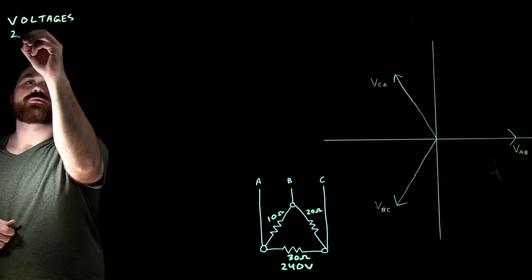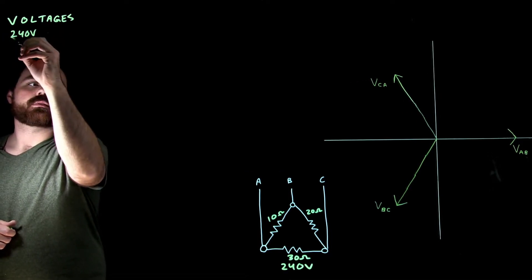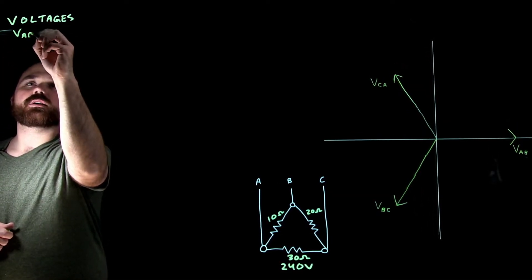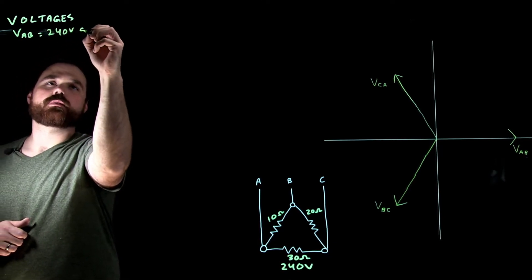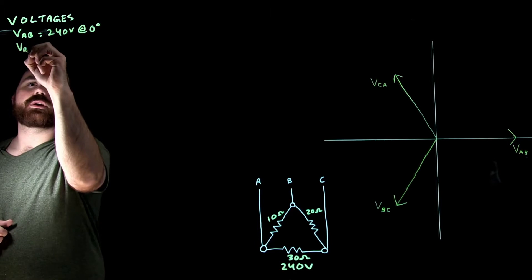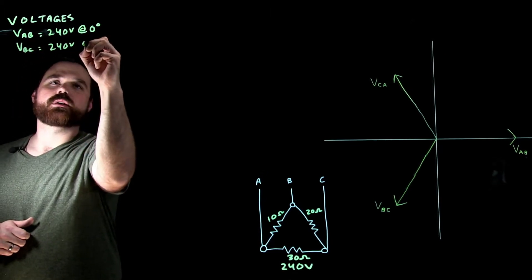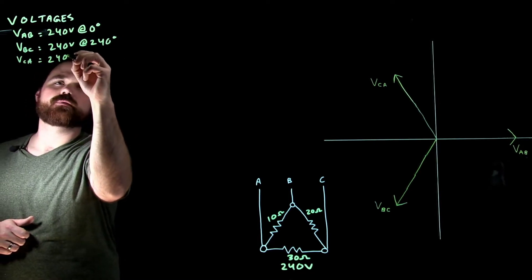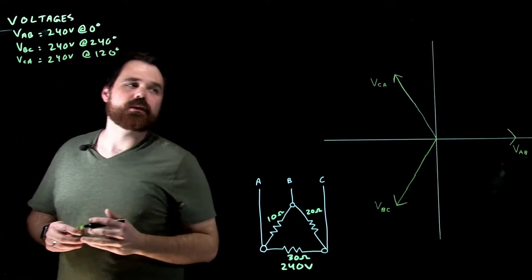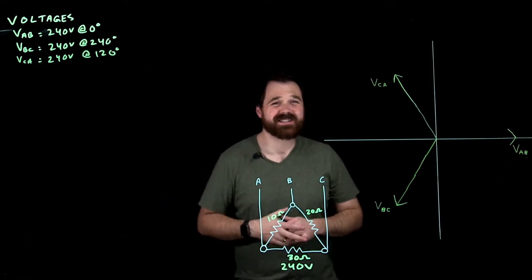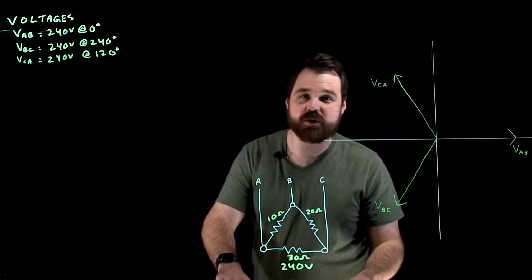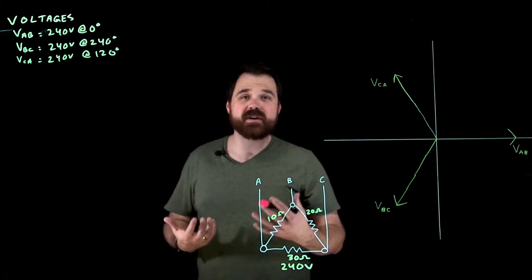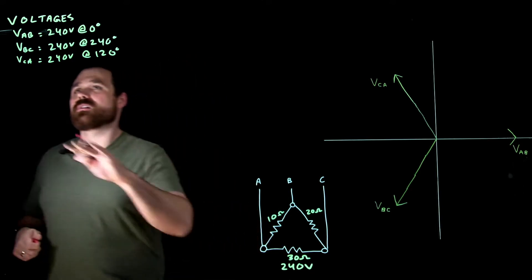Our three voltages are: V_AB equals 240 volts at 0 degrees, V_BC equals 240 volts at 240 degrees, and V_CA equals 240 volts at 120 degrees. Those are the three voltages from the source. The next step is to solve for the phase currents.